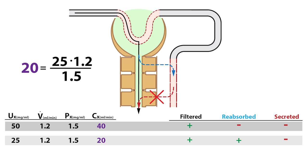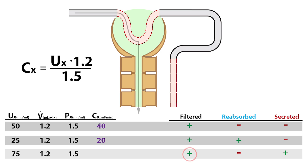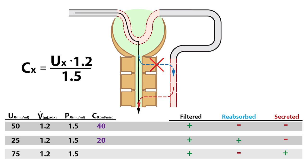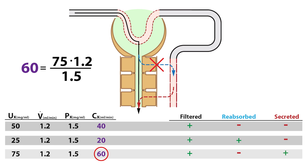What will the clearance rate of substance X be if it's freely filtered, not reabsorbed, but secreted? Again, the plasma concentration and urine flow rate remain unchanged at 1.5 mg/mL and 1.2 mL/min respectively. However, because substance X is now secreted, the urine concentration increases to 75 mg/mL. With these values, the clearance rate of substance X — freely filtered and secreted but not reabsorbed — will be 60 mL/min.